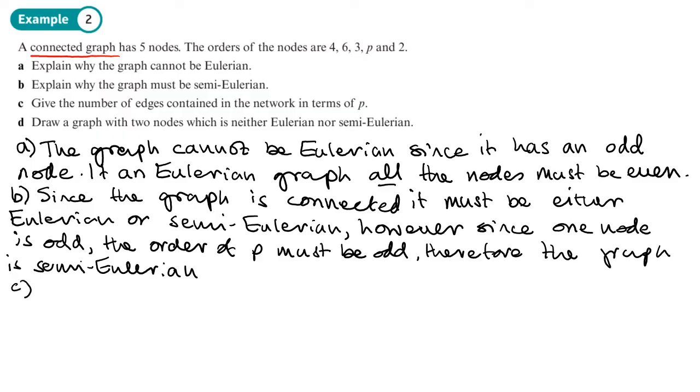Part C asks us to give the number of edges contained in a network in terms of P. Now, back in Chapter 2, you may remember something called Euler's handshaking lemma. And Euler's handshaking lemma links the sum of the valences, the sum of the orders of the vertices to the number of edges. And his handshaking lemma said this, that the sum of the valences is equal to two times the number of edges.